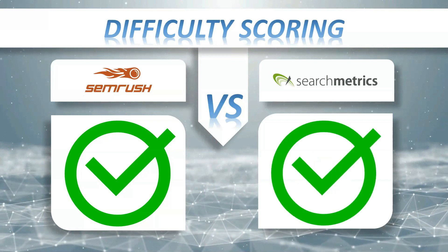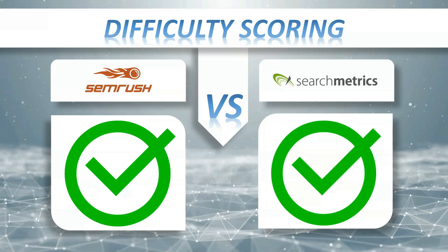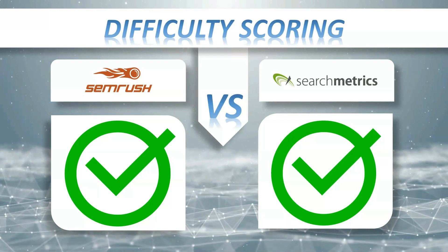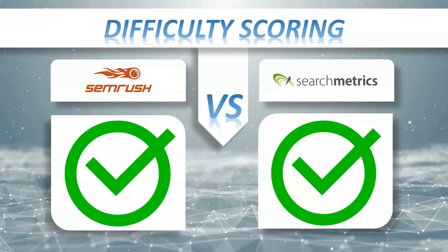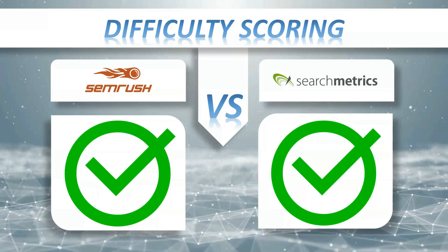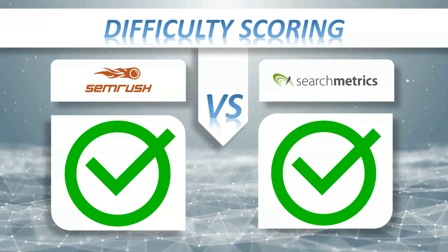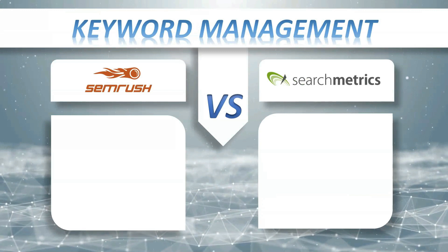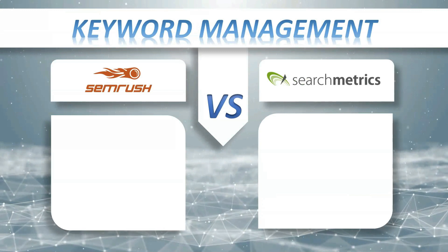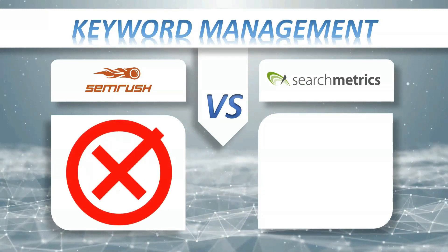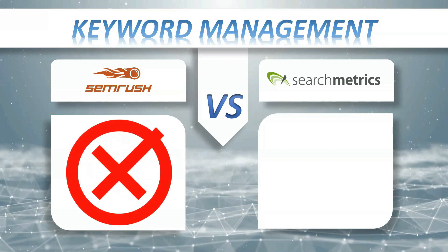Difficulty Scoring: SEMrush plus, Search Matrix Essentials plus. Keyword difficulty estimates how hard it would be to use SEO on a new web page to hypothetically outrank the web pages that are currently ranking on the first two pages of Google.